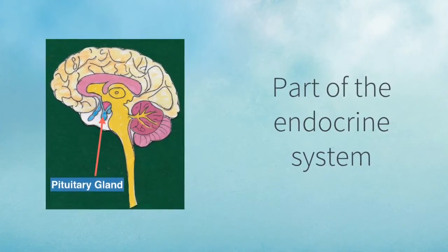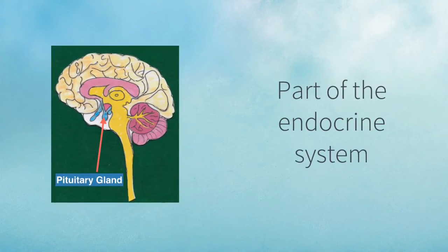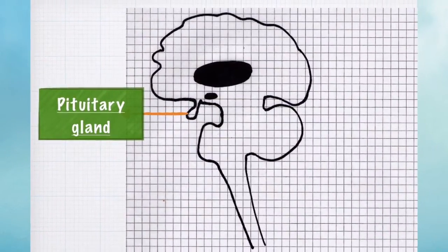Just to remind you that the pituitary gland is not part of the brain, it's part of the endocrine system, and it's referred to as the master gland.